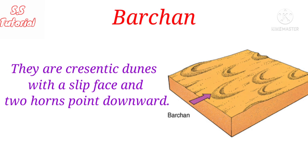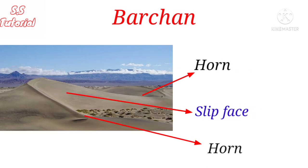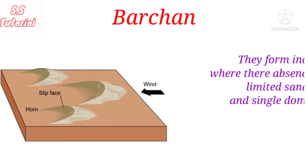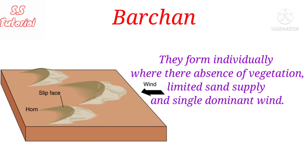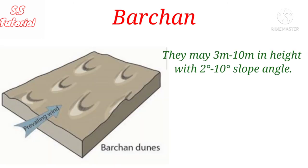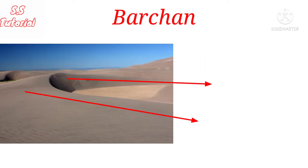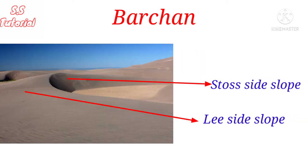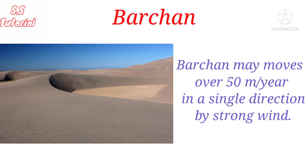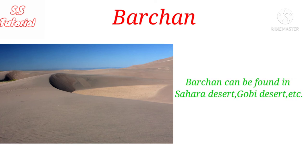Barkhans are crescentic dunes with a slip face and two horns that point downwind. They are formed individually where there is a single dominant wind direction, limited sand supply, and absence of vegetation. They are usually 3 to 10 meters in height with a 2 to 10 degree slope angle. The stoss side slope of a barkhan is convex, and the lee side slope is concave. Barkhans may move about 50 meters per year with the help of strong wind moving in a single direction. They are found in the Sahara desert, Gobi desert, and elsewhere.